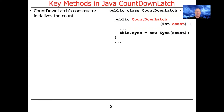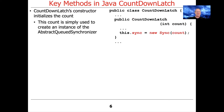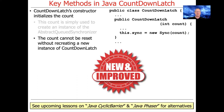The CountdownLatch's constructor is used to initialize the count — surprise, surprise. It just creates a new sync object with the count, which is used under the hood to create an instance of the AbstractQueuedSynchronizer. That's all that sync is: it's AbstractQueuedSynchronizer.